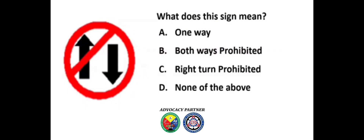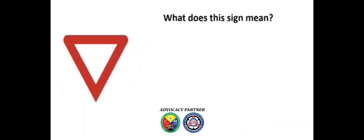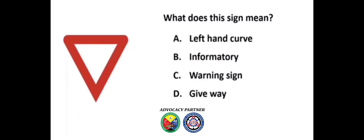What does this sign mean? A) One way, B) Both ways prohibited, C) Right turn prohibited, D) None of the above. Answer: A) One way. What does this sign mean? A) Left hand curve, B) Informatory, C) Warning sign, D) Give way. Answer: D) Give way.